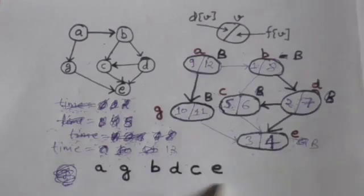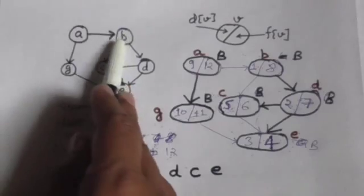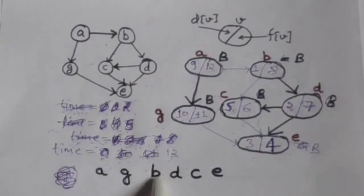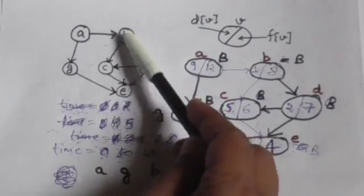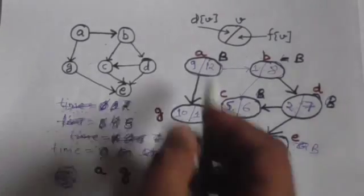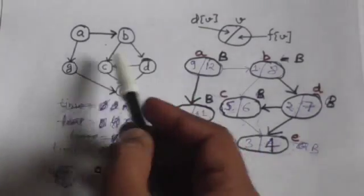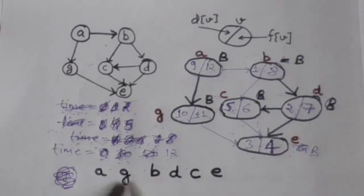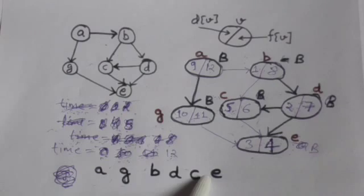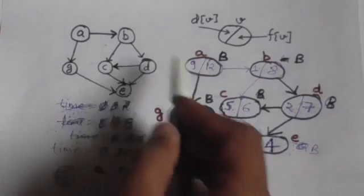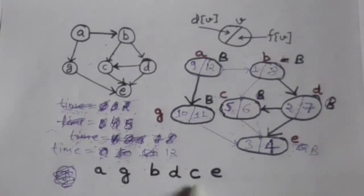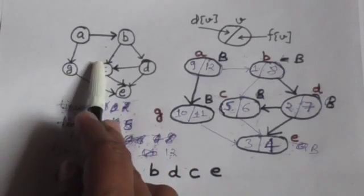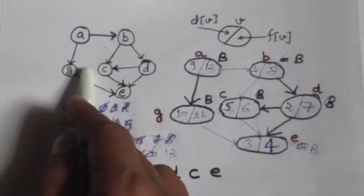Notice that in this directed acyclic graph there is an edge AB, so vertex A appears before vertex B in this linear ordering. There is an edge BC, so vertex B appears before vertex C in this ordering. There is an edge GE, so vertex G appears before vertex E. There is an edge DC, so vertex D appears before vertex C in this linear ordering. This linear ordering of all vertices is the topological sort of this directed acyclic graph.